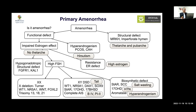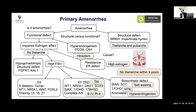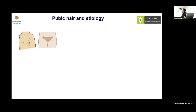Four groups of disorders cause tall stature with primary amenorrhea: estrogen receptor defect, XY DSD, aromatase deficiency, and gonadal dysgenesis. Primary amenorrhea is classically defined as no menarche within five years of onset of breast development, or by age 15. To differentiate structural from functional causes, look at breast and pubic hair development. If all components of pubertal development are present but there is still amenorrhea, this may indicate a structural defect.